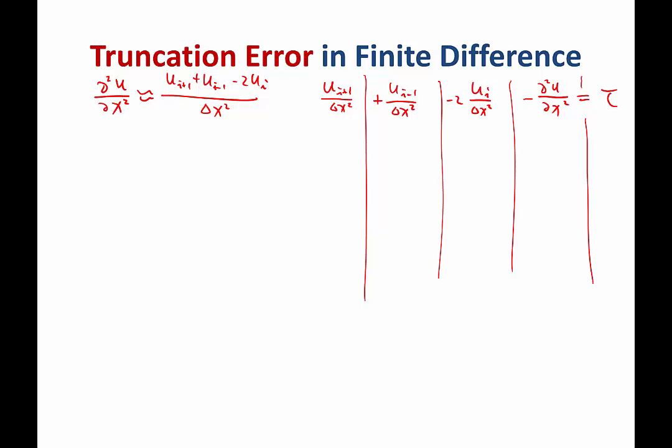We expanded what is the term that contains ui. For example, this is just ui. This is also just ui. This is minus 2 ui over delta x squared. This is 0. So that cancels out to be 0.